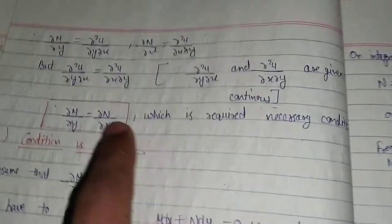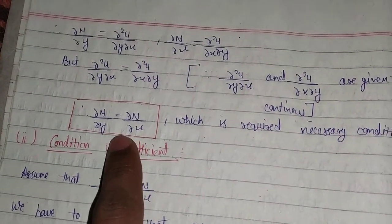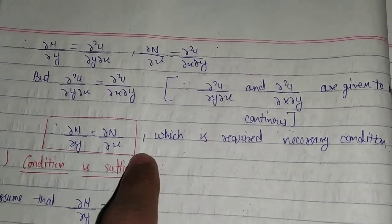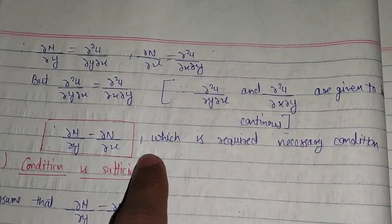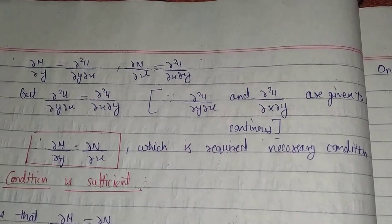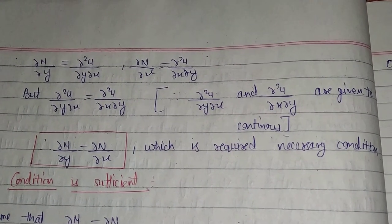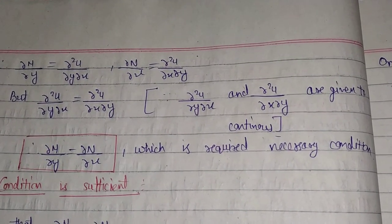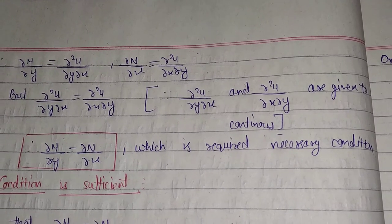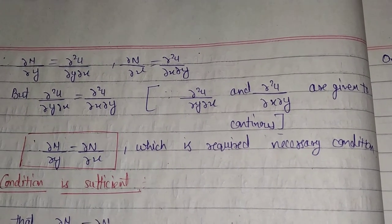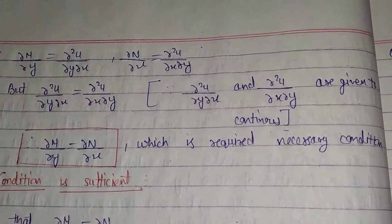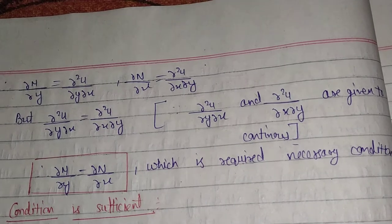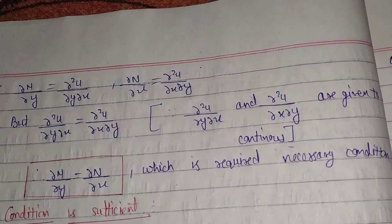The necessary condition to check if an equation is exact is: ∂M/∂y = ∂N/∂x. That means, first of all, you will compute the partial derivative of M with respect to y, and the partial derivative of N with respect to x, then check if both are equal.